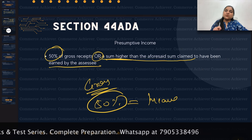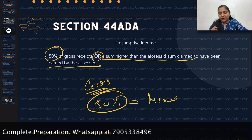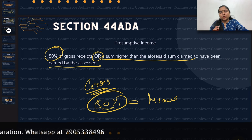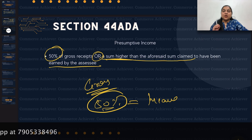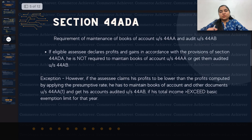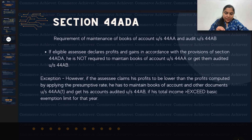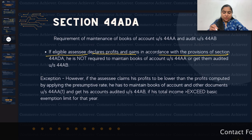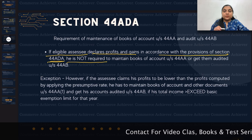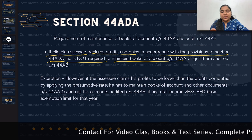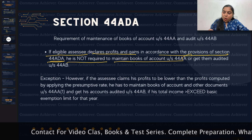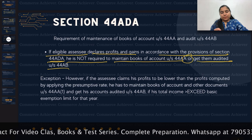The computation is on gross receipt — this 50% is on gross, as confusion has been seen on this point. The 50% of gross receipt becomes your income. Books of account and audit are generally not required. If an eligible assessee declares profit and gain in accordance with Section 44 ADA, he or she is not required to maintain books of account under Section 44AA or get them audited under 44AB.